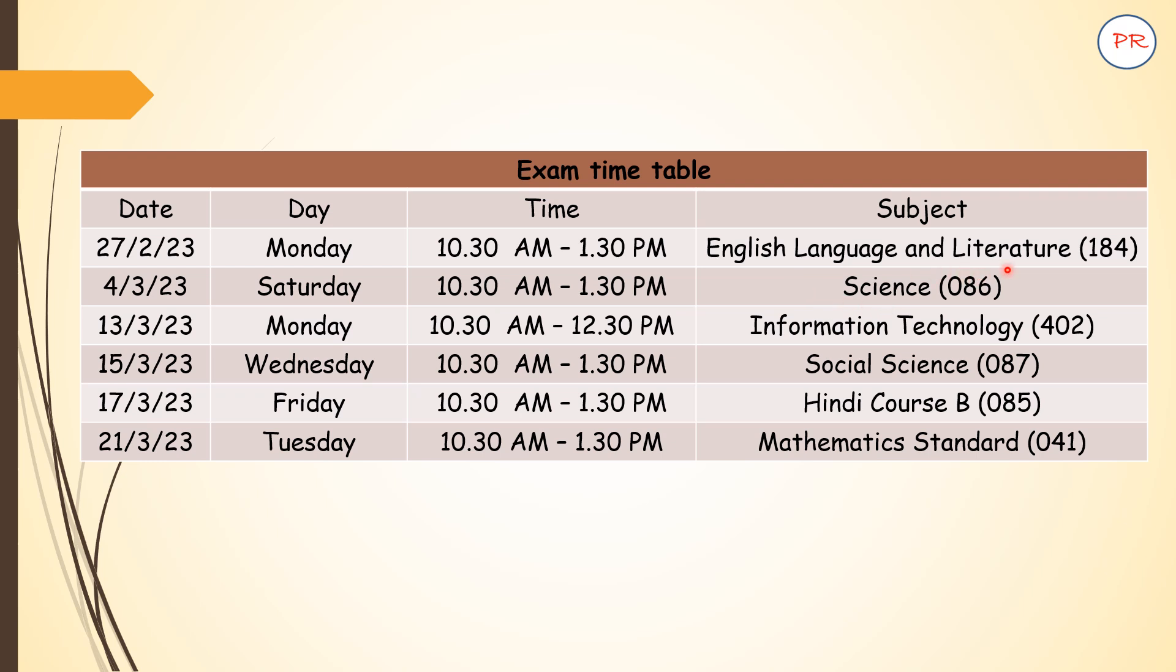Now if you observe carefully, between this first paper and second paper of science, you are getting total three and half days time. 27th will be half day, whereas you will get 28th, 1st and 2nd, 3rd for the preparation of science. So that time you can use it for preparation. Now between science and information technology, you can see there is a lot of gap, nearly about 8 days gap. So that 8 days gap, you can use it nicely for preparation of your remaining subject like social science, Hindi course B, or mathematics standard. You can divide that time, at least 4 days in between. You can use it for remaining subjects. And last, just before this information technology exam, for 3 days you can use it for your preparation of information technology.